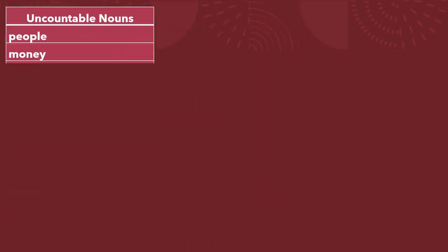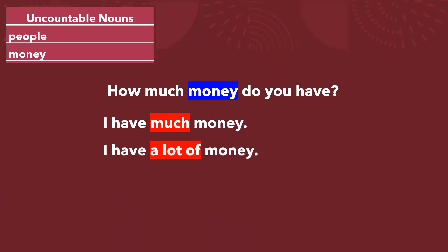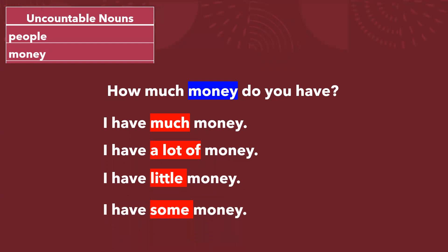Let's check these examples. Uncountable — how much money do you have? I have much money. I have a lot of money. I have little money. I have some money.